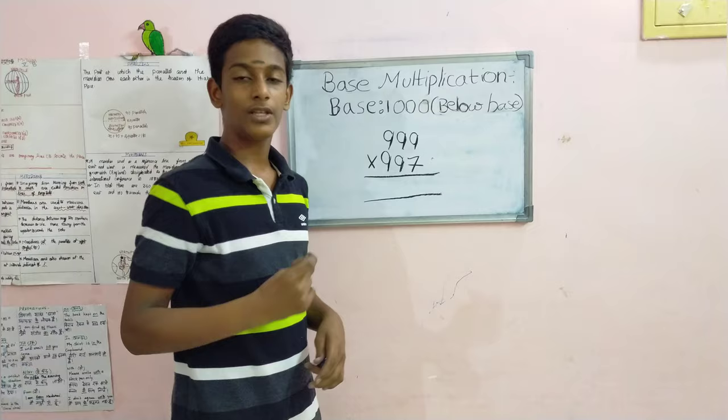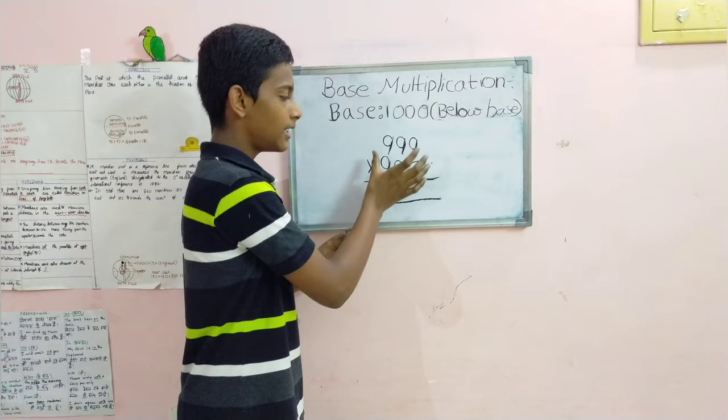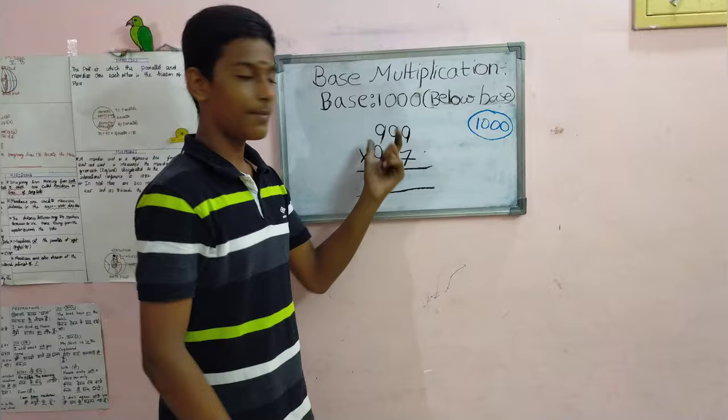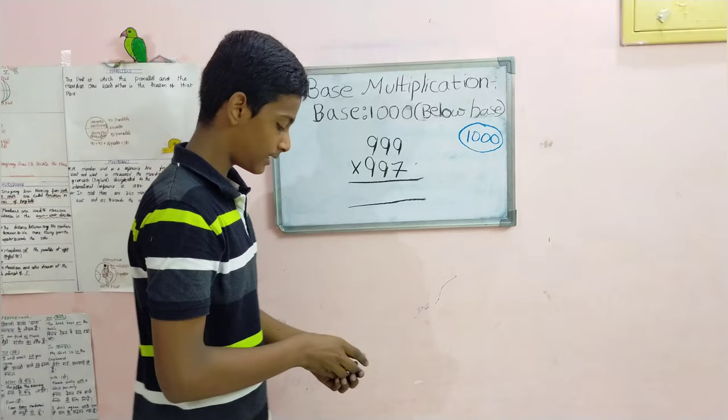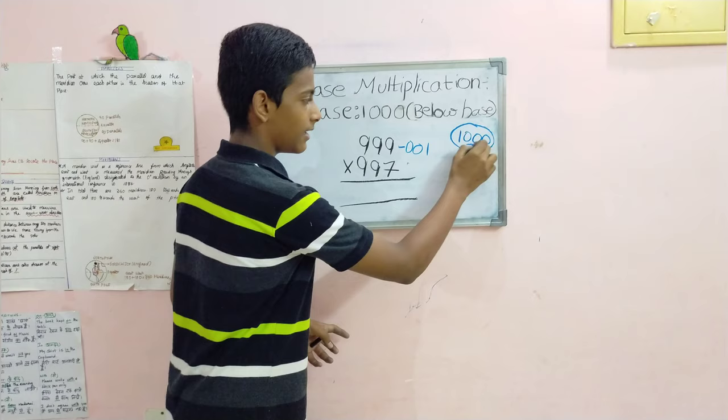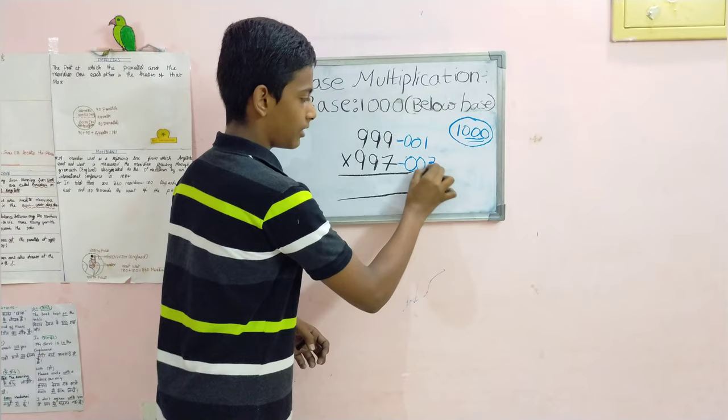As we did in the last two videos, we have to find the nearest primary base for these two numbers. In this case it is 1000. The second step is to identify the difference between these two numbers and the base. 999 is smaller than 1000 by 001, and 997 is smaller by 003, as there are three zeros in thousand.